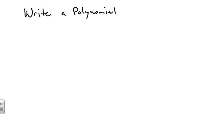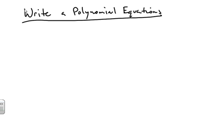Hello and welcome back. If you saw my other tutorials, we're going to be talking about polynomial functions. This is a continuation of the discussion of polynomials — specifically, how to write a polynomial equation or function. We're going to be given some zeros. For example, problem number 56 that I assigned for homework gives you: 2, and then 4 plus the square root of 5, and 4 minus the square root of 5.